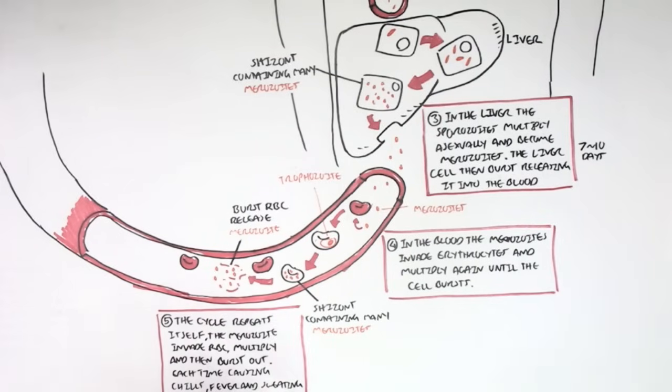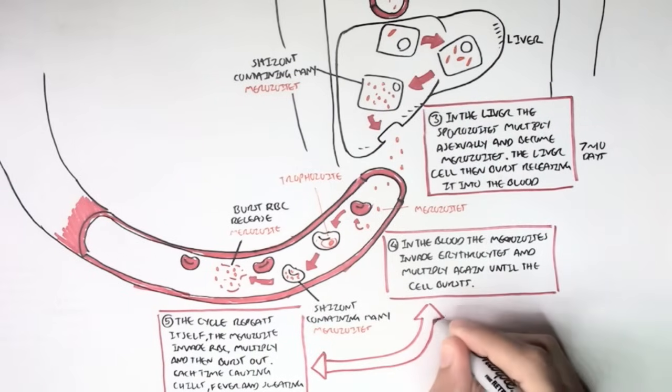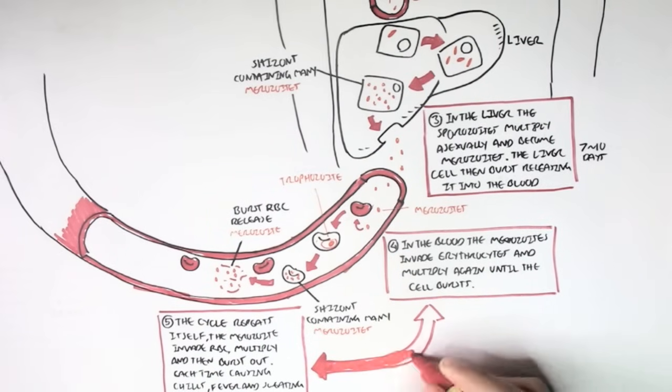So, with each time these red blood cells burst, releasing more merozoites, the person will keep having chills, fever, and sweating, and this cycle just continues, and this may eventually lead to death because of depletion of red blood cells, for example, and high temperature.